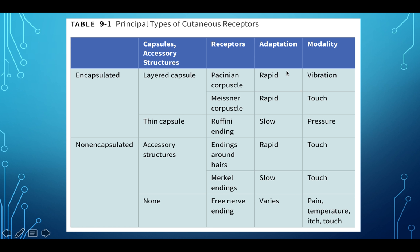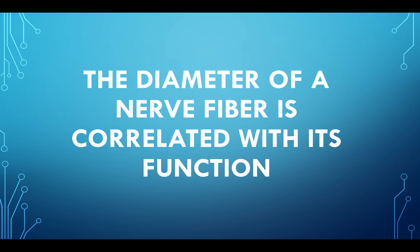Encapsulated receptors are where you're really testing the dorsal columns. You've got vibration by the Pacinian corpuscles, and then pressure and touch. What I may ask on the test is what modality would affect what receptors — for example, applying pressure would affect which receptor for the central nervous system. From a clinical standpoint, we need to know that the diameter of a nerve fiber is correlated with its function.